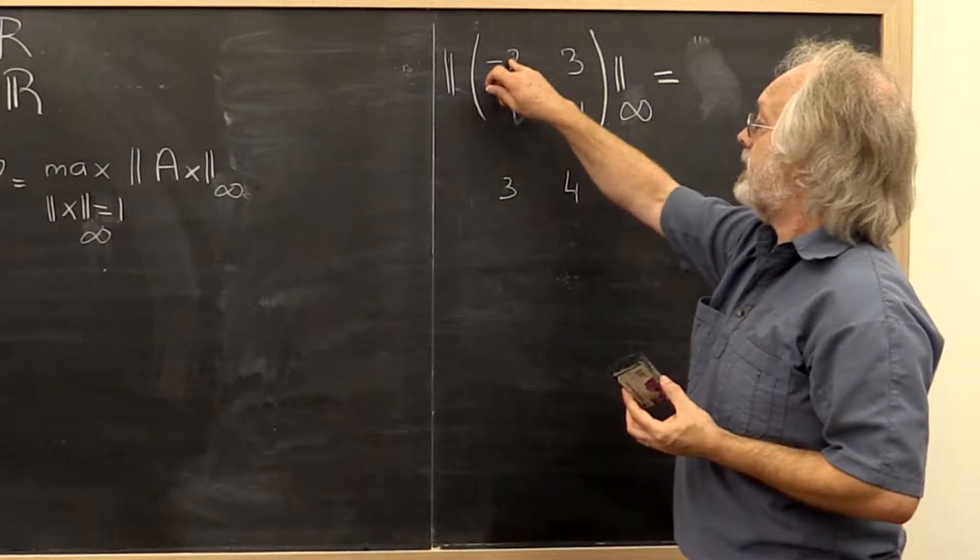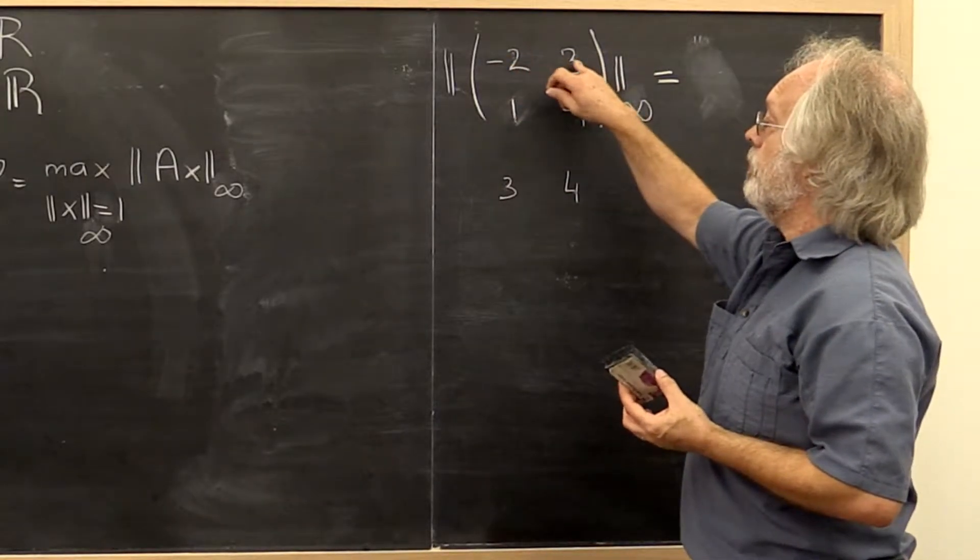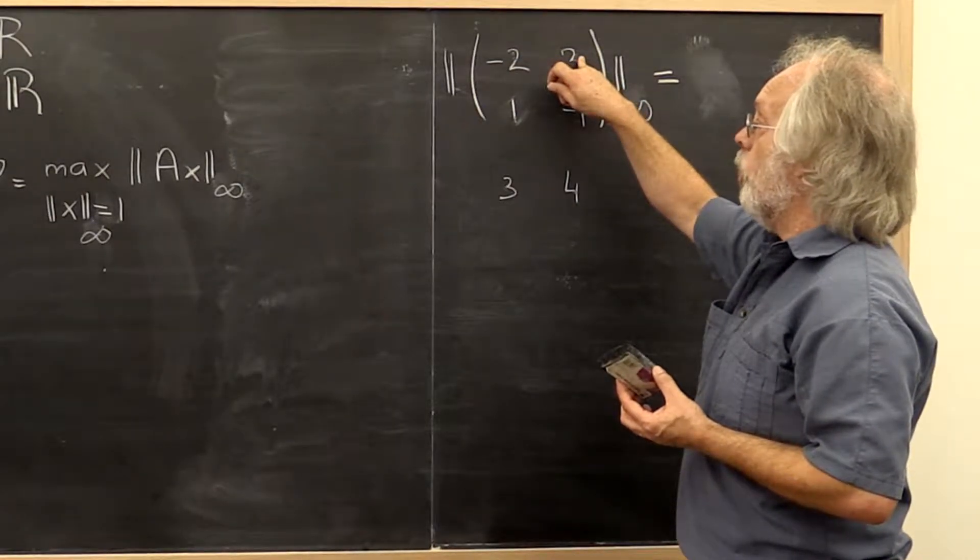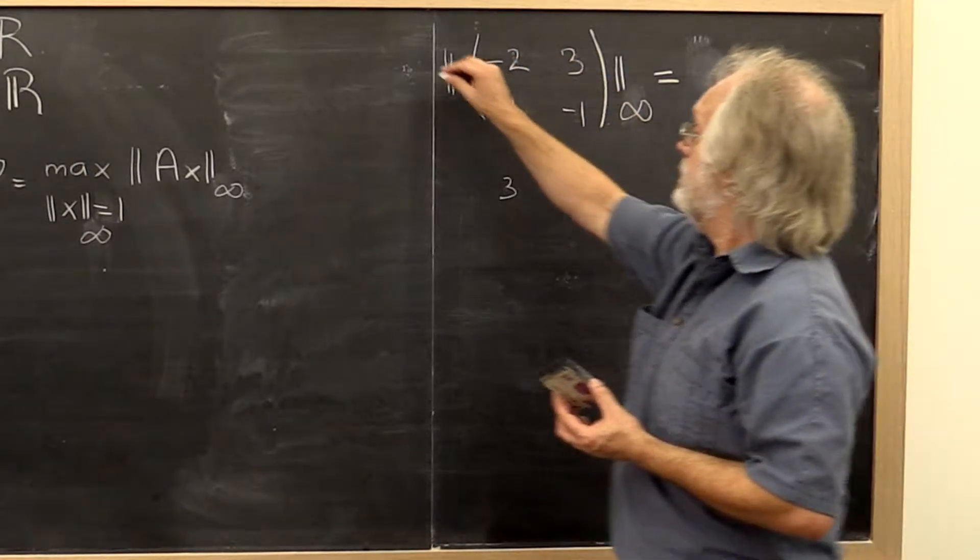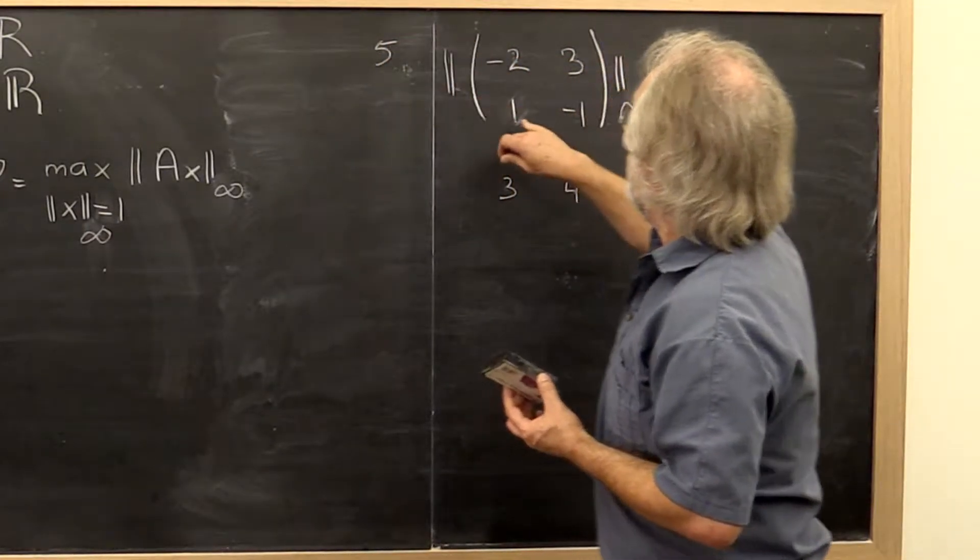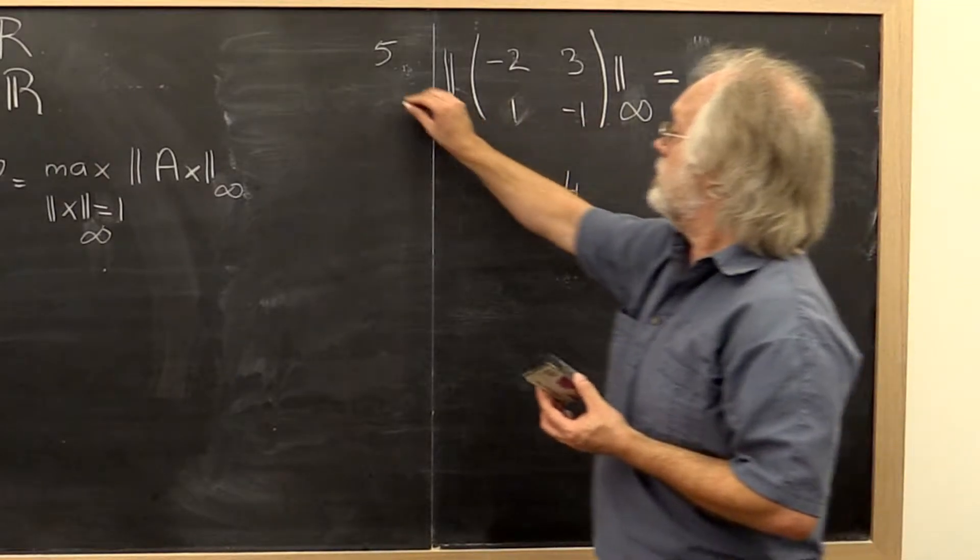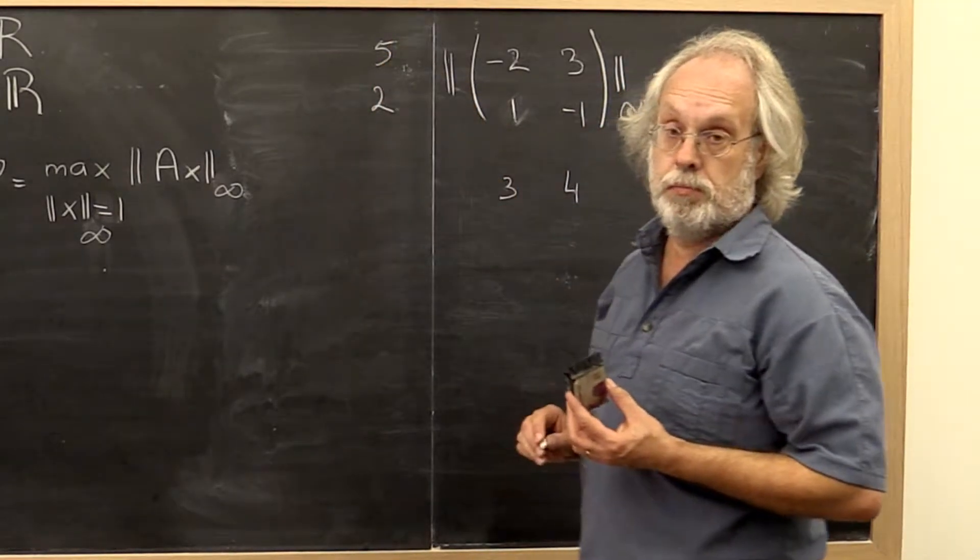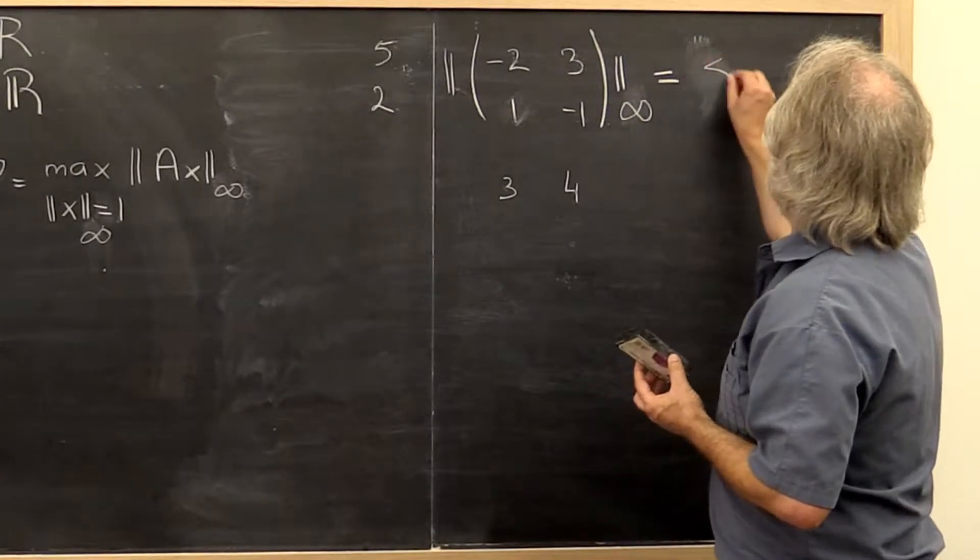You look at the vector 1 norm of the row. So you think of this as a column vector. You take its 1 norm. The 1 norm here is 5. And for the second row is 2. And then you take the maximum of those two numbers. And it turns out to be 5.